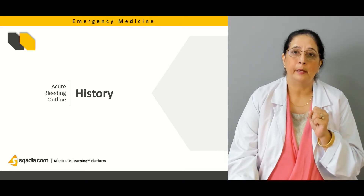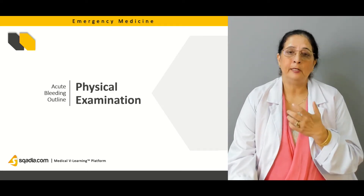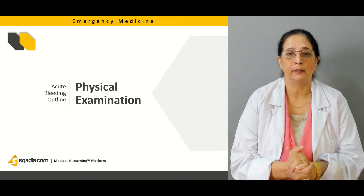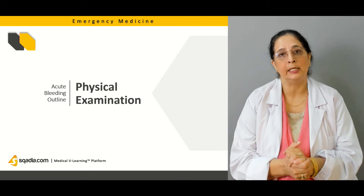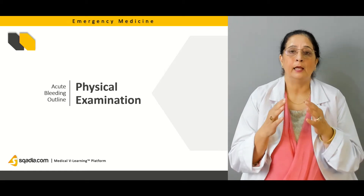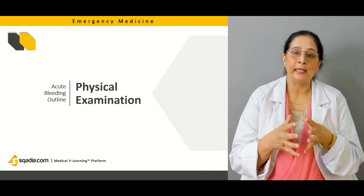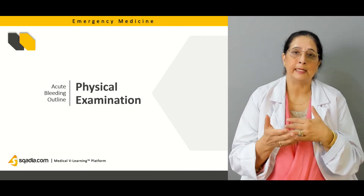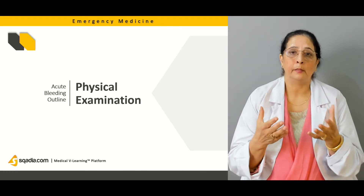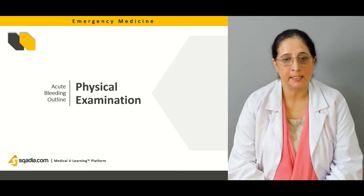Then we will talk about the physical examination findings of acute bleeding, like any neurological findings, vital signs of the patient with acute bleeding, and then skin findings like purpura, petechiae, rash, melena, or any occult blood — all of that we will discuss in detail.